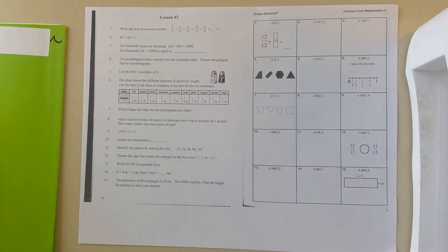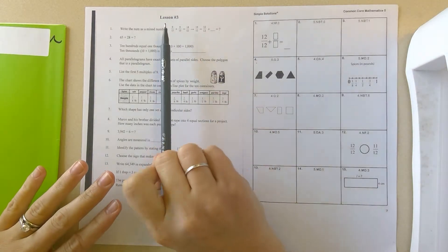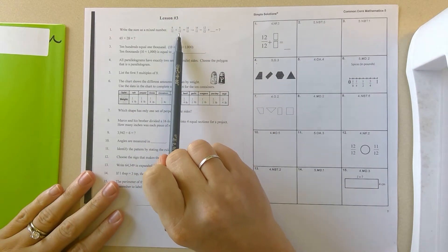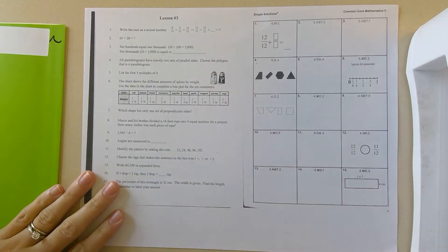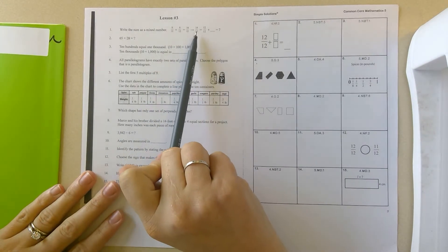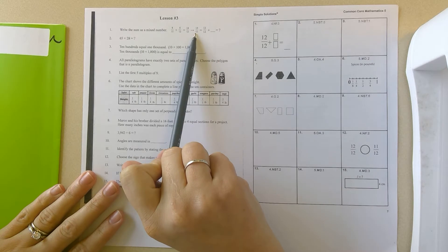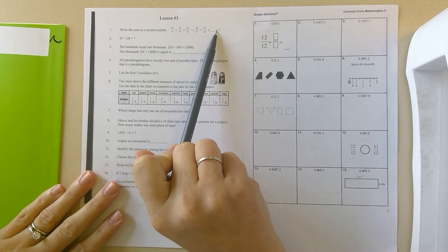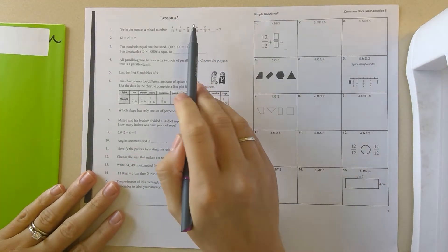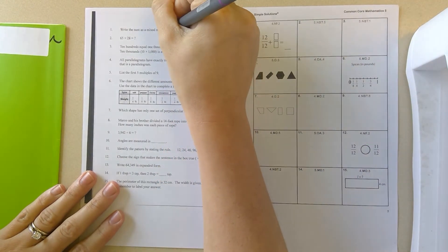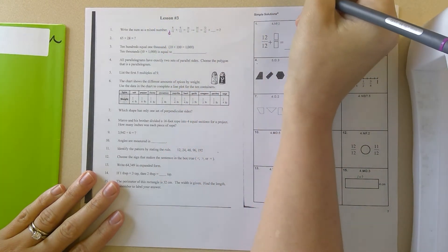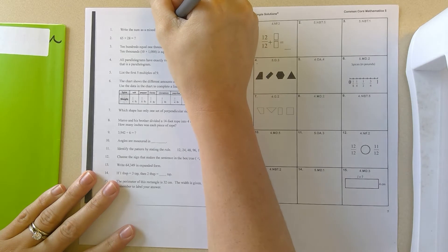Hey guys, we're going to go over lesson number three. So on number one, it says write the sum as a mixed number. So it's saying 8 twelfths plus 6 twelfths equals 14 twelfths, which we agree. Now it says 14 twelfths equals 12 twelfths plus how many twelfths. So no matter what, if you look on the bottom number is your denominator. I'm going to put a D. The top number on a fraction is called the numerator.